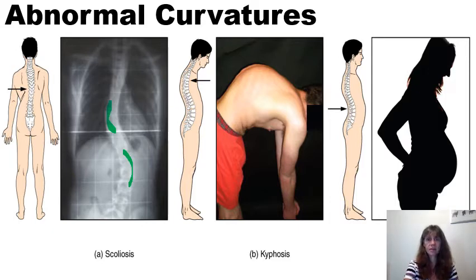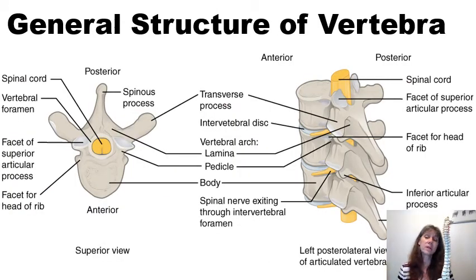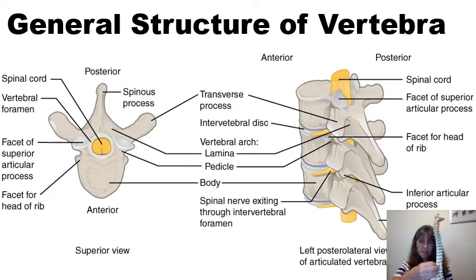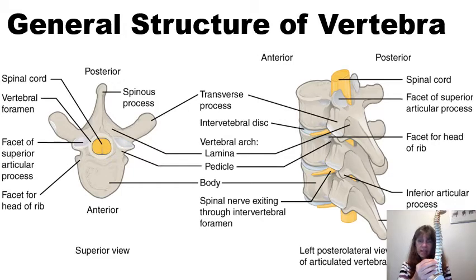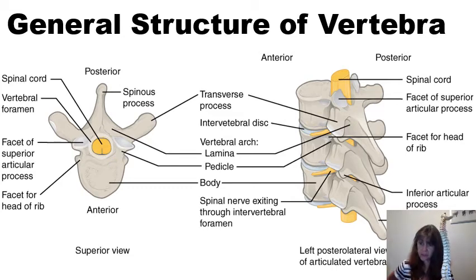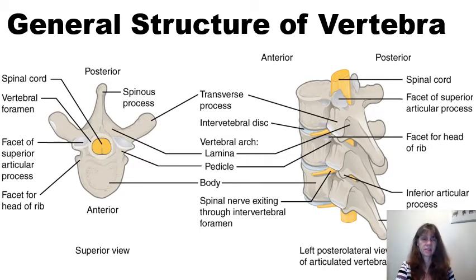Here is an example of hyperkyphosis, and here we have an example of hyperlordosis. When we look at the general structure of a vertebra, you'll notice that the thicker portions, referred to as the vertebral bodies, are located anteriorly in the vertebral column. The spinous processes, which you could feel on your own back, are located posteriorly. On this picture, you can see the vertebral body anteriorly and the spinous process located posteriorly.